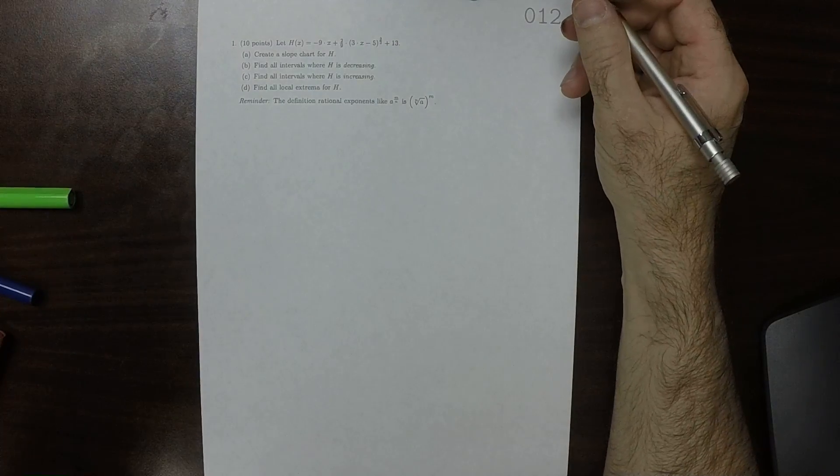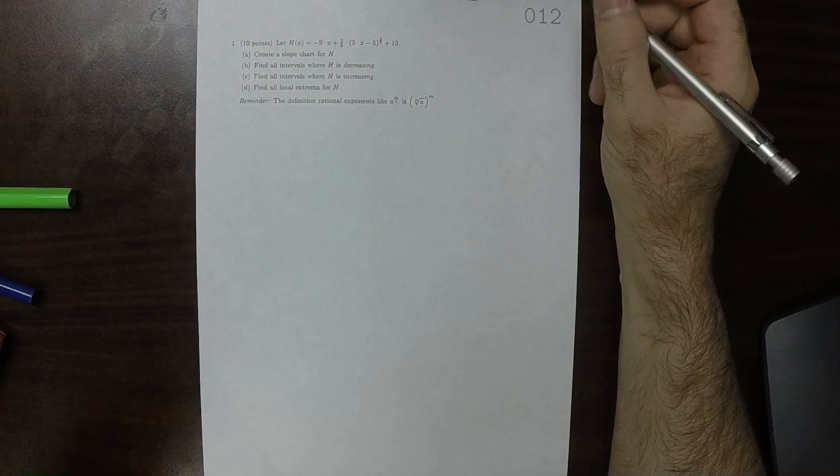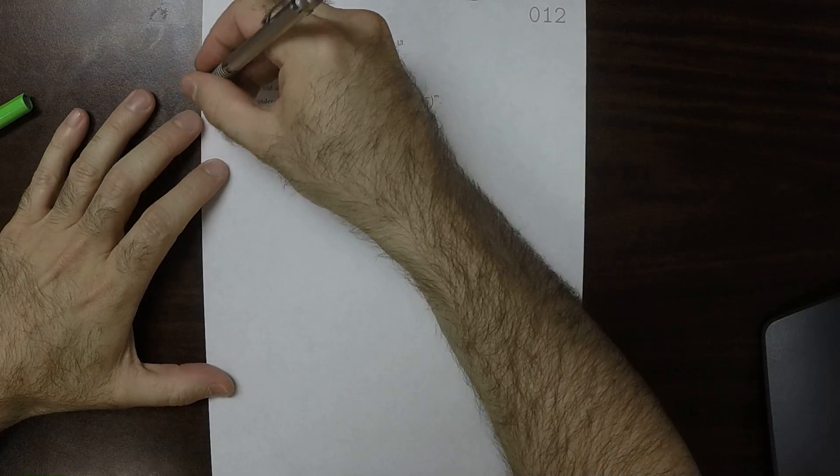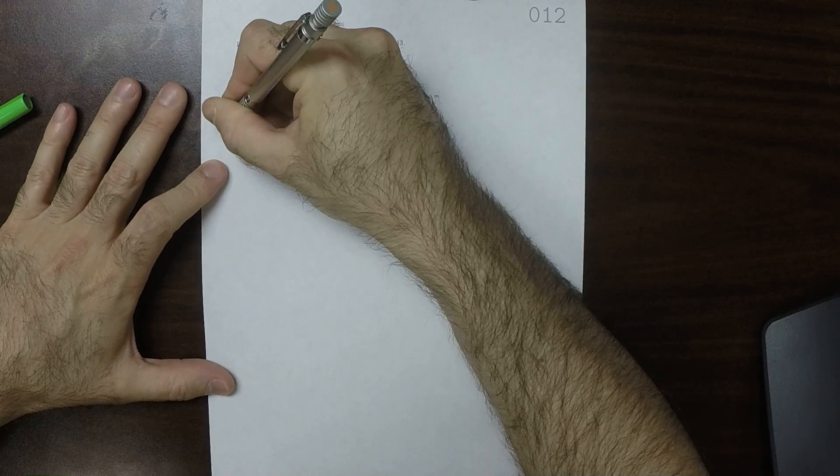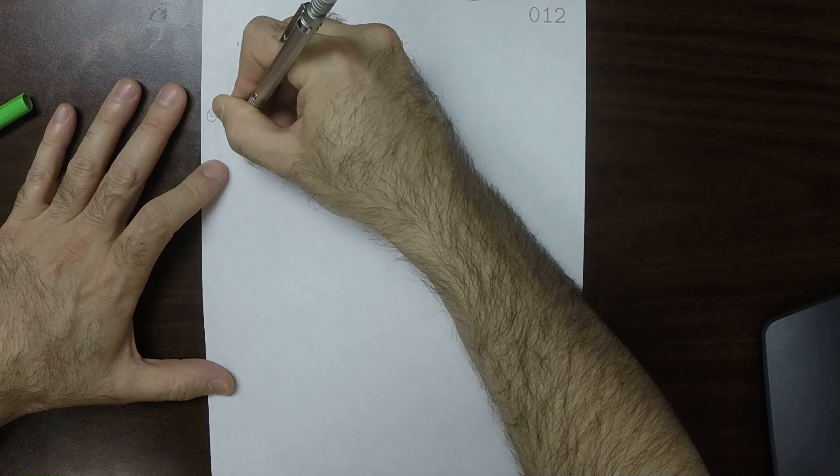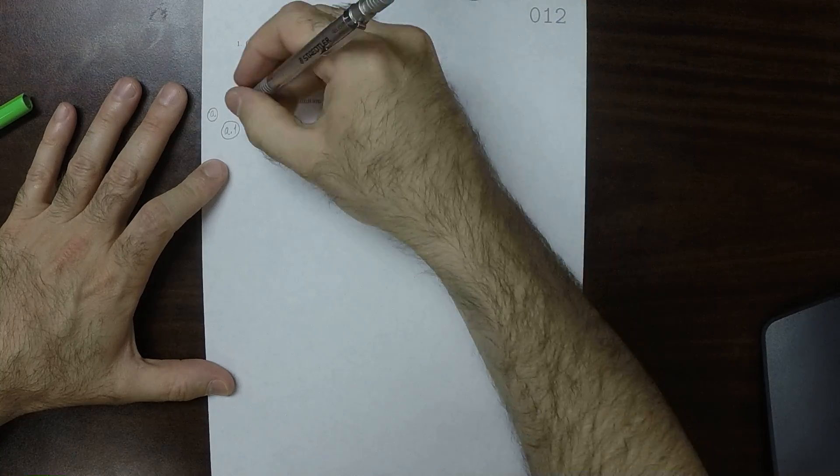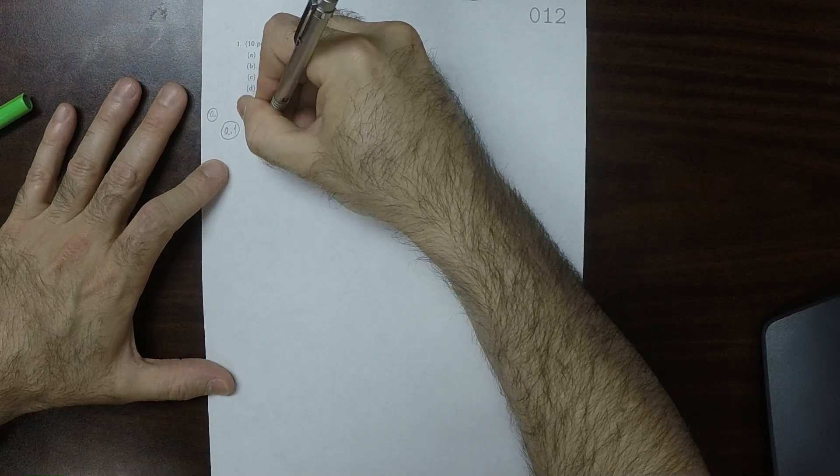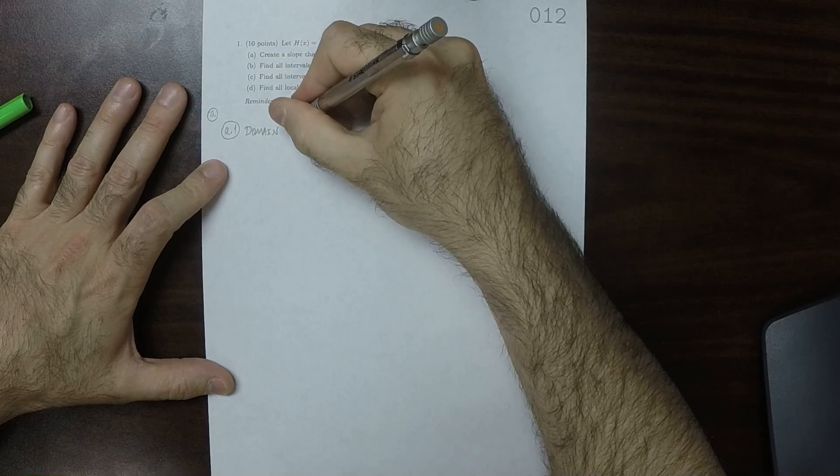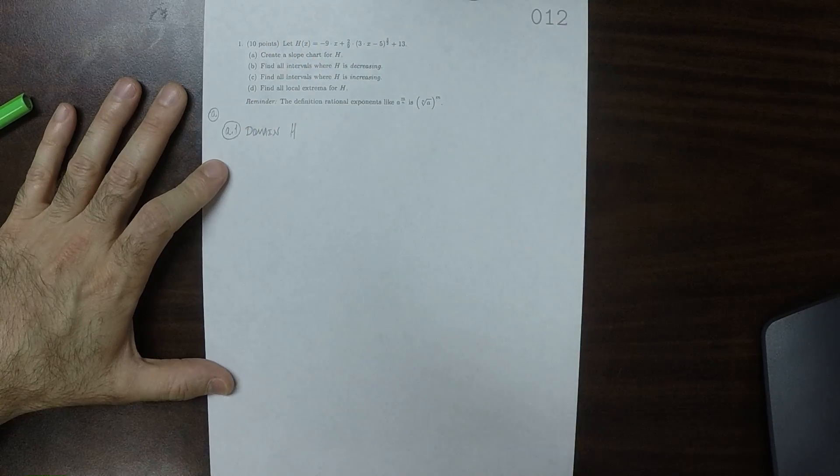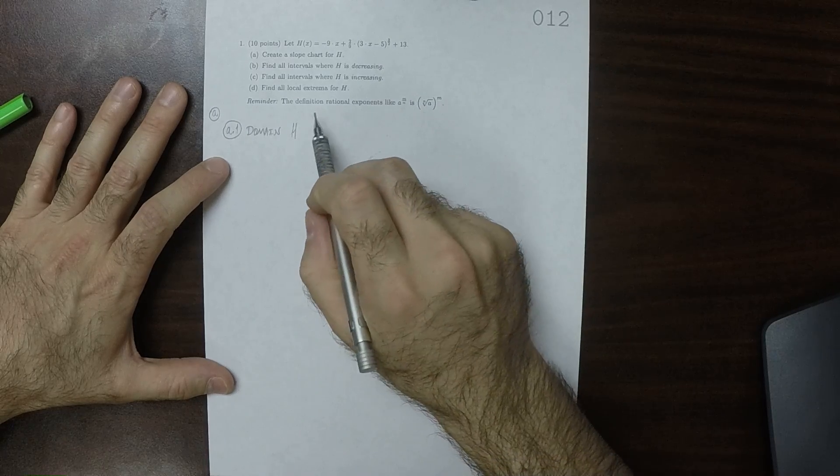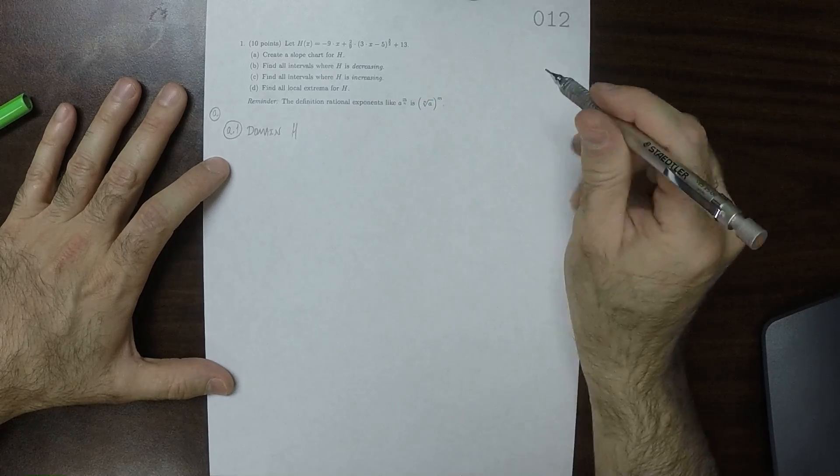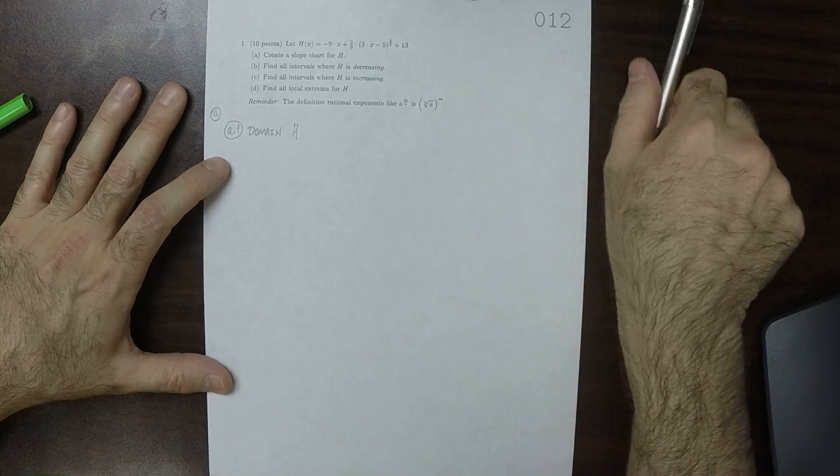This is the solution to WEC012. Okay, so for part A, the first step of making a slope chart is to find the domain of the function. So the domain of H. The reminder here is to help you with this first step.